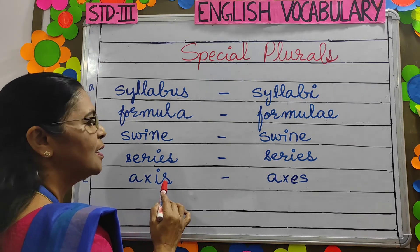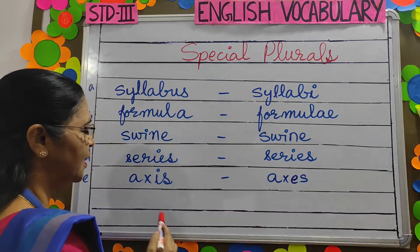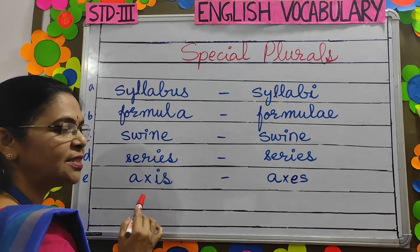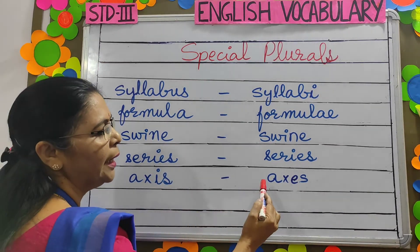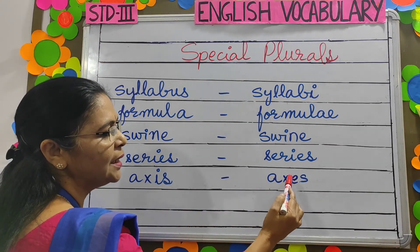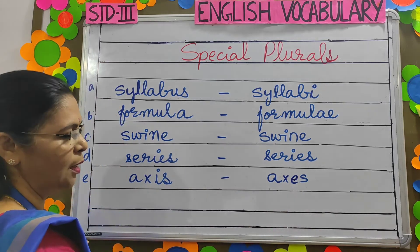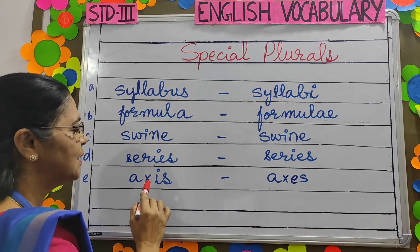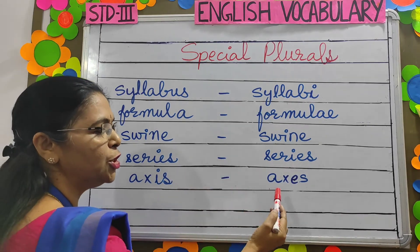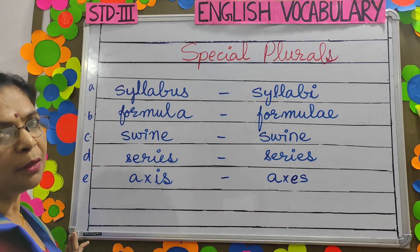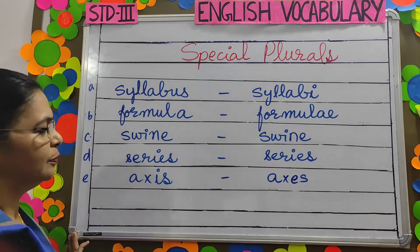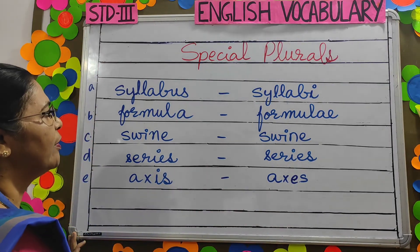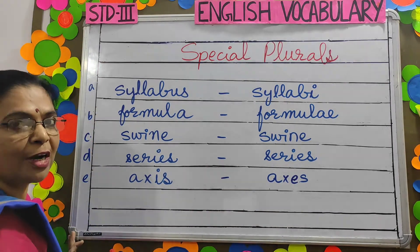Axis — A-X-I-S is singular, and A-X-E-S is plural. The letter I changes to E in the plural. Axis becomes axes.